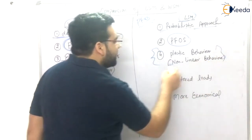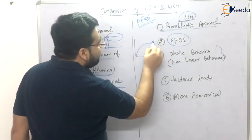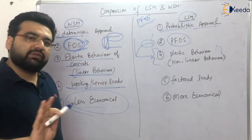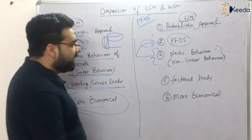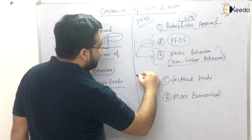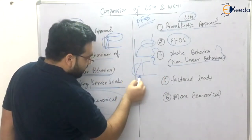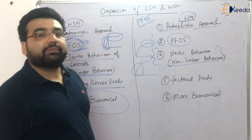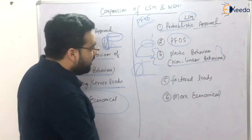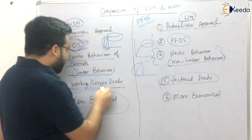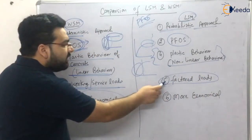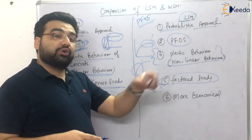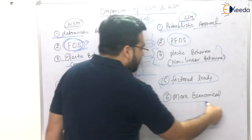The limit state method involves plastic behavior — we are dealing with the ultimate portion of the stress-strain curve as well, not just the service load range. It considers nonlinear behavior, whereas the working stress method only considered linear behavior. The loads used here are factored loads: the working or service loads multiplied by a partial factor of safety, giving factored or augmented loads. Therefore, the limit state method is more economical.